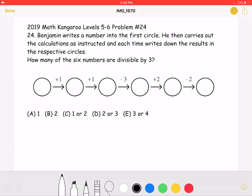This is the 2019 Math Kangaroo, Levels 5-6, Problem Number 24. Benjamin writes a number into the first circle. He then carries out the calculations as instructed and each time writes down the results in their respective circles. How many of the six numbers are divisible by three?